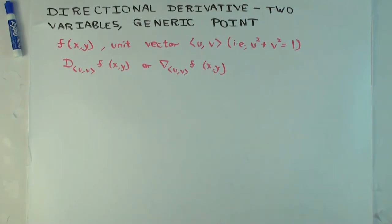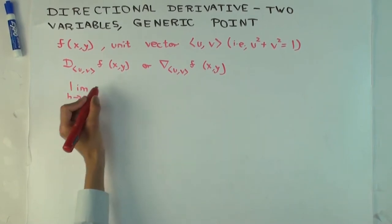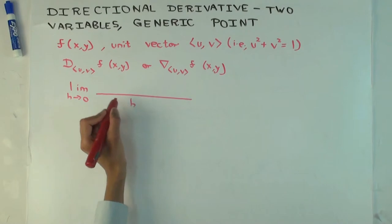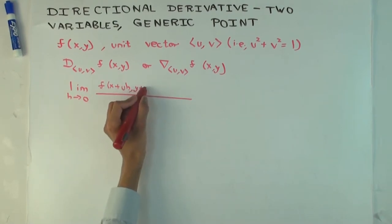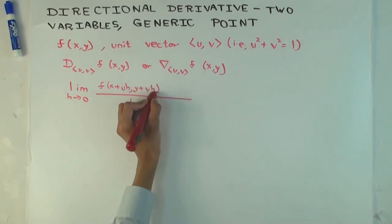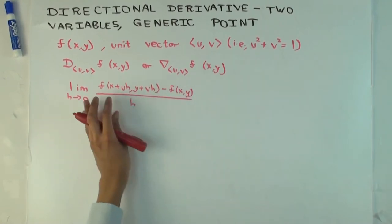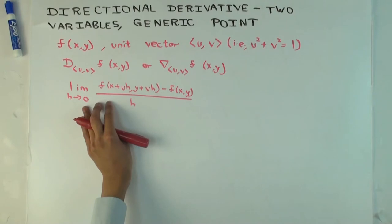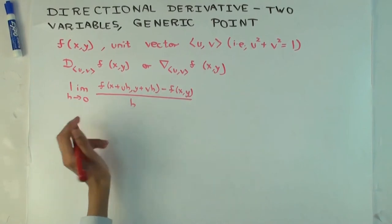So let's first go over what the definition is as a limit. What's the definition of the limit? [Student responds: f(x+uh, y+vh) - f(x,y) divided by h.] Yes. But notice now, this limit is not a number. This limit itself will be a function of x and y, and those are the things that are varying.